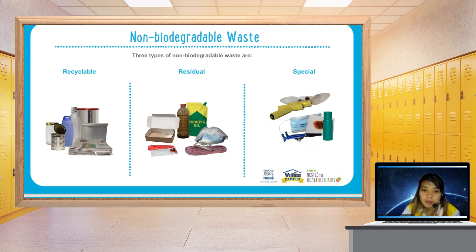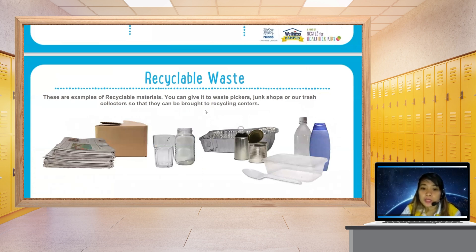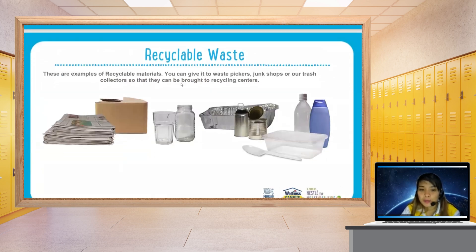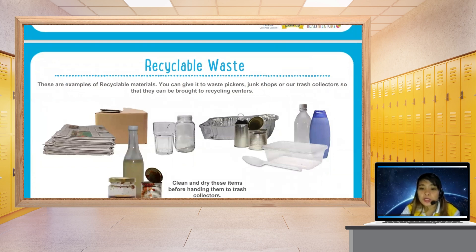Recyclable materials include plastic, paper, and cans. Residual waste includes cooking oil containers, used diapers, and sleepers. Special waste includes old electric fans that cannot be used, batteries, and razors. Recyclable materials can be given to waste pickers, junk shops, or trash collectors, who can put them to good use — plastic bottles, paper, cans, and plastic containers can all be used again.